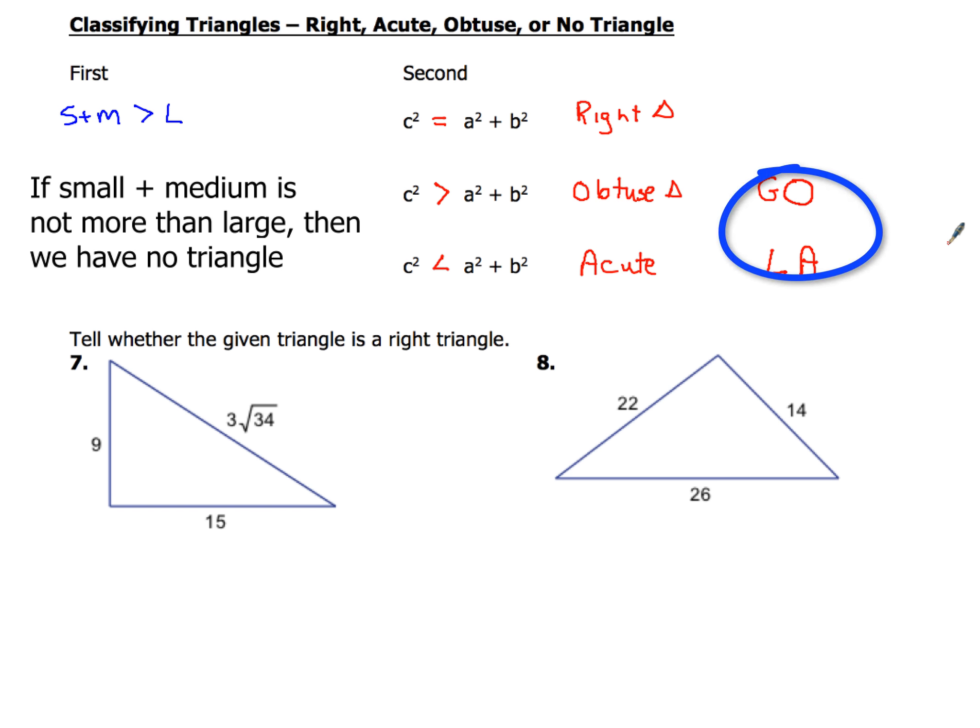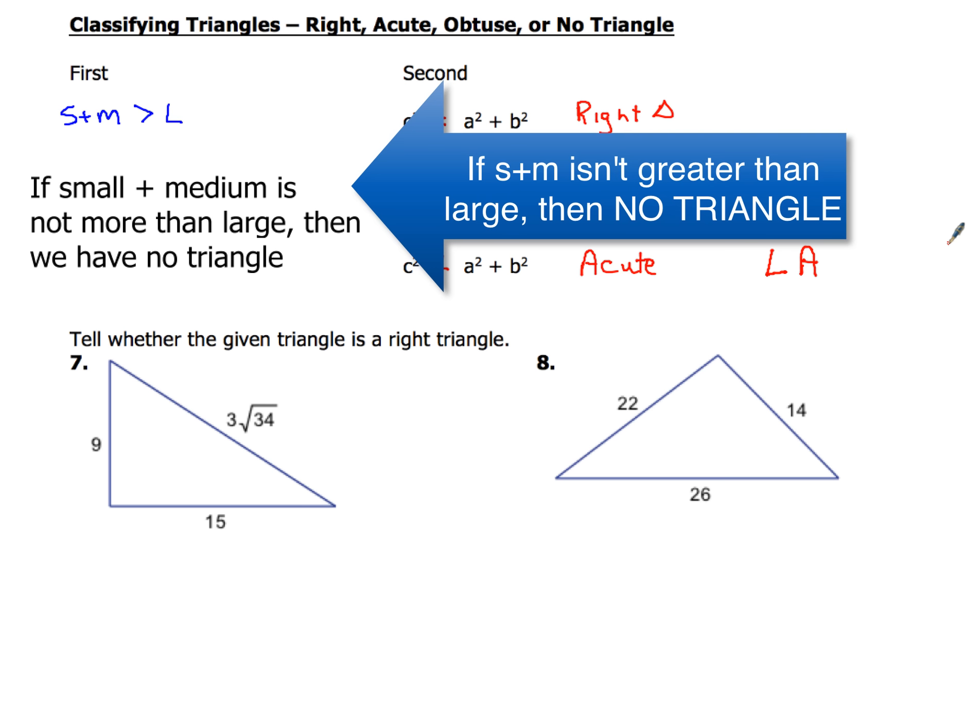Greater obtuse, less than acute. And otherwise, you're right if c squared equals a squared plus b squared. But maybe you're not right because small and medium don't add up to large, and you've got no triangle. So let's kind of take a look at this and see what we've got.